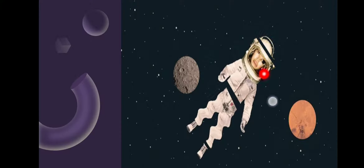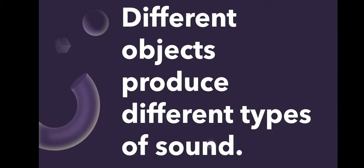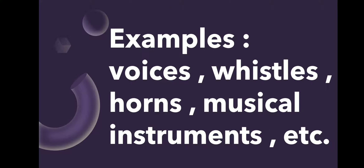So, there is no sound in outer space. Different objects produce different types of sounds — for example, voices, whistles, horns, musical instruments, etc. They all produce different types of sound.